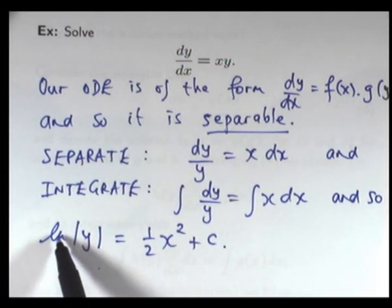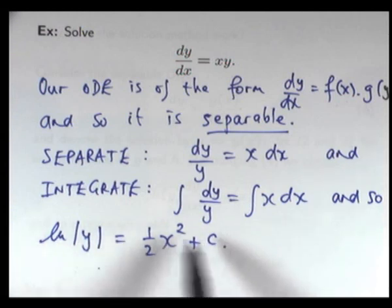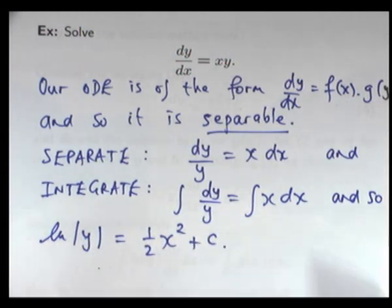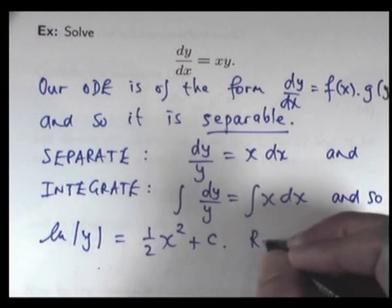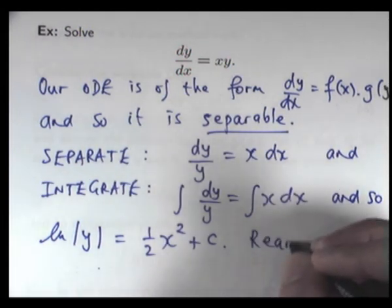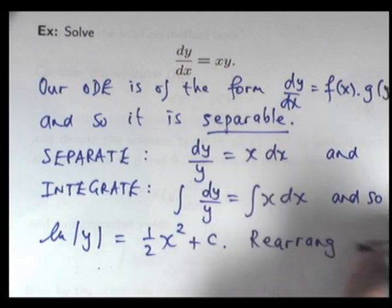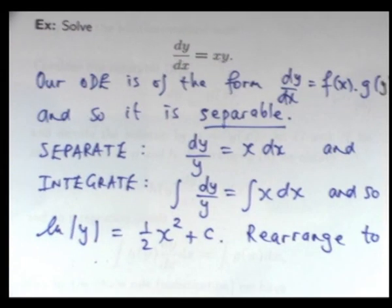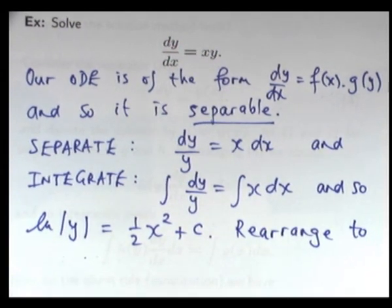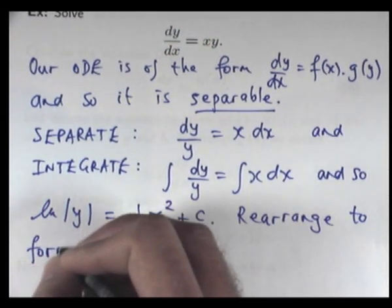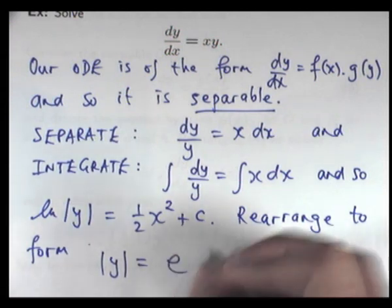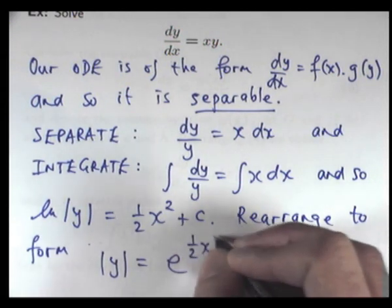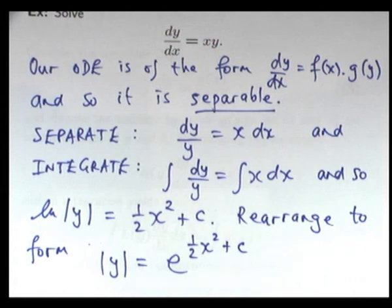The first thing I can do is remove the logarithm by taking the exponential of both sides. Okay, so I guess we're rearranging here. So, absolute y is going to be e to the half x squared plus this constant.